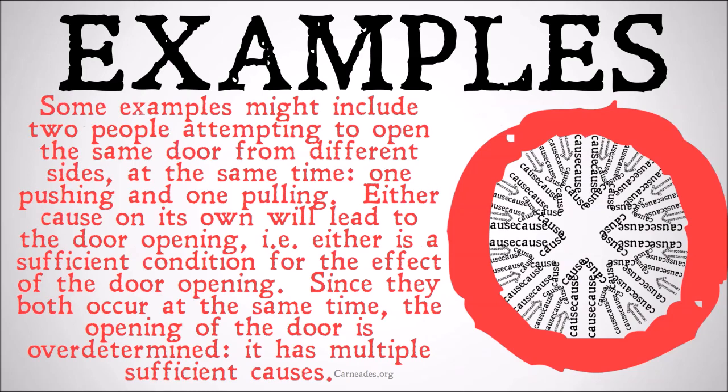What does over-determination really mean? Some examples of a situation that's over-determined might include two people attempting to open the same door from different sides at the same time, one pushing, the other pulling. The door opens, but the opening of that door is over-determined by both of those causes. Either you pulling the door or that person pushing the door would have led to the door being opened. Since they both occur at the same time, the opening of the door is over-determined — it has multiple sufficient causes.